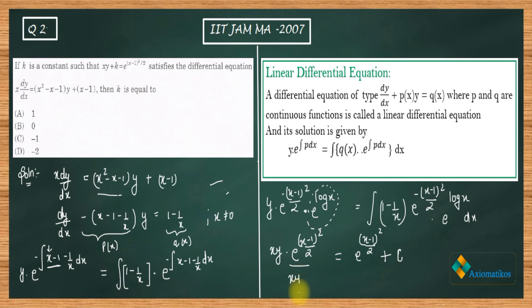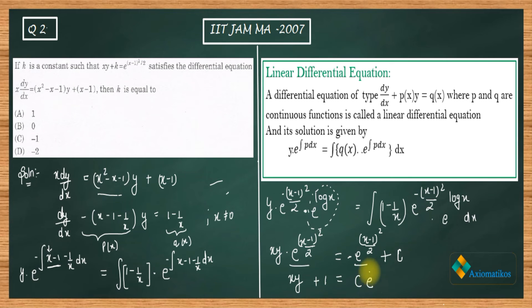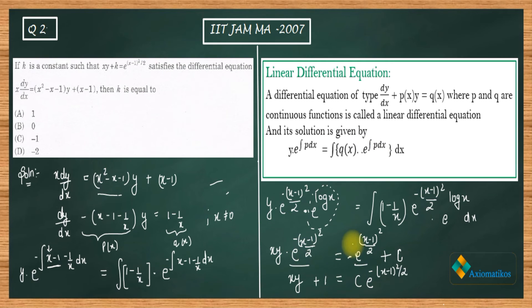After integrating and simplifying, we get x · y · e^((x−1)²/2) equals minus e^(−(x−1)²/2) plus c. Dividing both sides by e^((x−1)²/2), we obtain: xy + 1 = c · e^((x−1)²/2). Note there is a minus sign that gives us the +1 on the left side after rearranging.